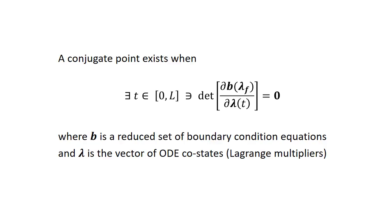This results in a so-called conjugate point test. If we find a conjugate point on the integration interval, the solution is physically unstable. This can be tested by evaluating the determinant of the matrix of partial derivatives of the boundary conditions with respect to the costates.